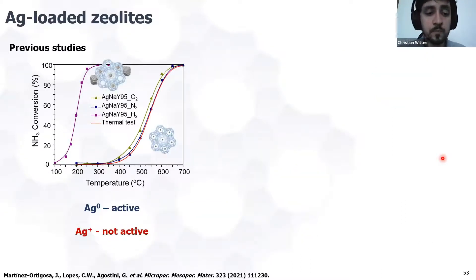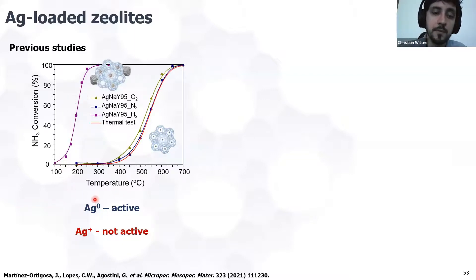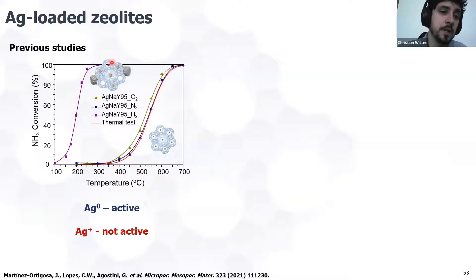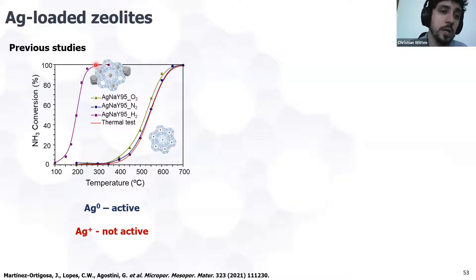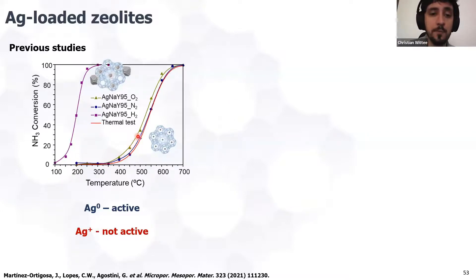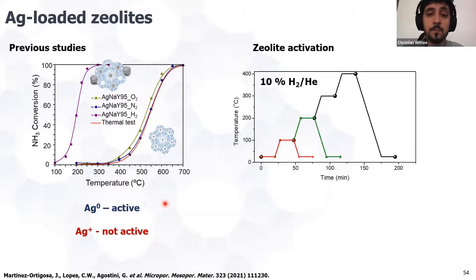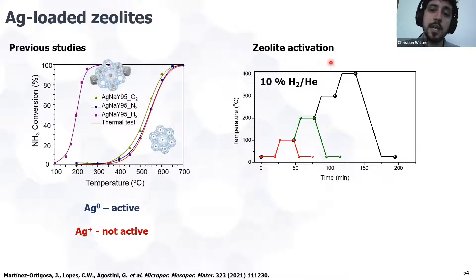For the SCO of ammonia, previous studies showed that silver zero (metallic silver) was the active species for converting ammonia into nitrogen. When we have nanoparticles at the surface of the zeolite, we obtain 100% conversion at around 200–300°C. When we have silver cations, the conversion profile resembles thermal decomposition of ammonia, confirming that metallic silver is the active species. Taking this into account, we activated the zeolite using 10% hydrogen in helium at different temperatures: 100, 200, and 400°C.